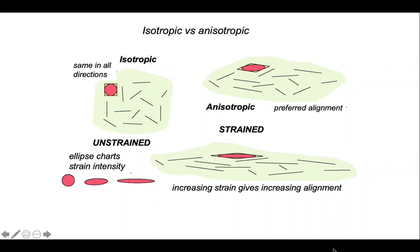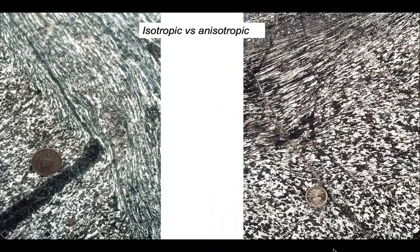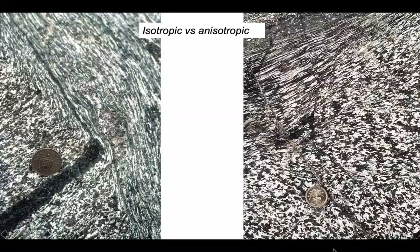So let's look at a couple of examples in outcrop. Both of these come from the Kohastan Arc in the Pakistan Himalayas and both are in meta-igneous rocks. And both of these views show more or less isotropic and anisotropic material.